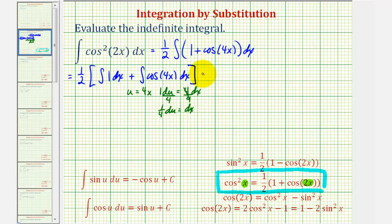So we can write this as one-half times the quantity of the integral of one dx, and then we'll have plus the integral of, and again, u is 4x, so we have cosine u, but dx is equal to one-fourth du, so we'll factor out the one-fourth, and then we have du here.